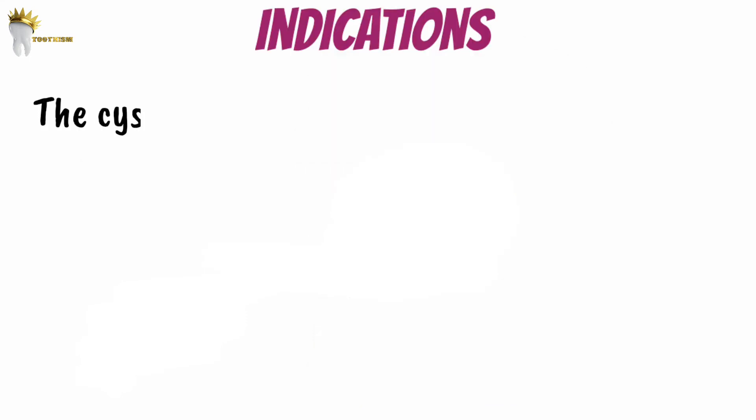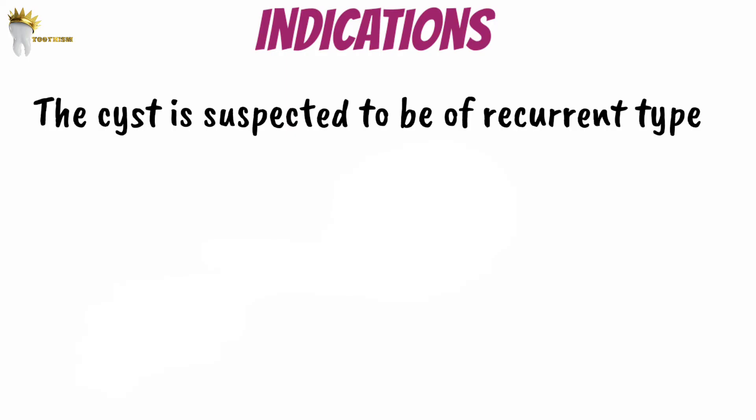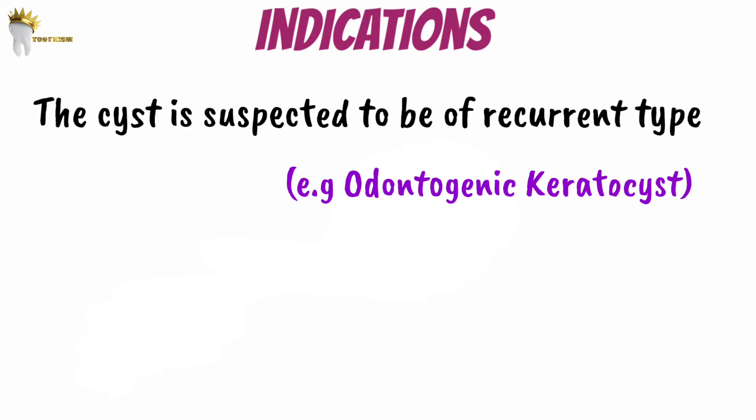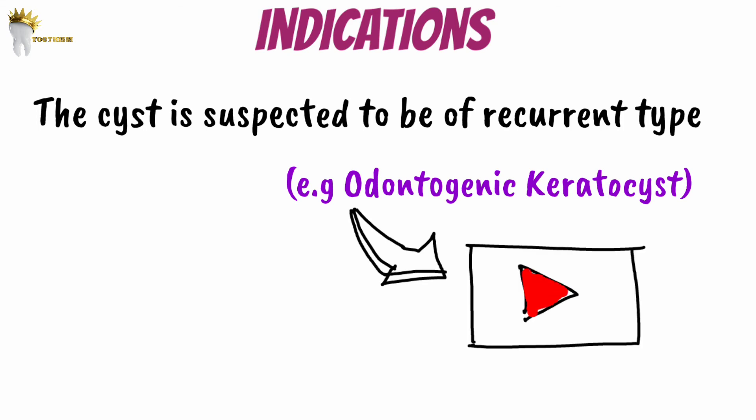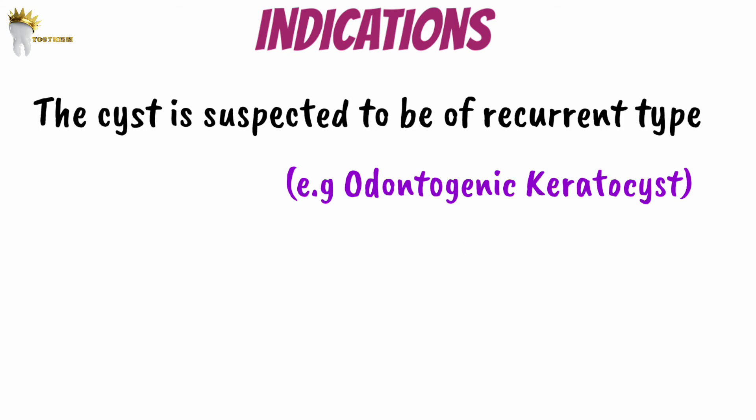The indication for this is if the cyst being removed is suspected to be an odontogenic keratocyst (OKC), because it has a high recurrence rate and the cystic lining is usually very thin and gets readily fragmented during enucleation. If by radiologic examination or aspiration we clinically suspect the cyst to be an OKC, the treatment should be careful enucleation with aggressive curettage of the bony cavity. We will discuss the complete management of OKC in another video.